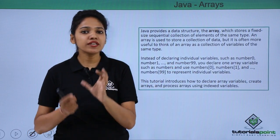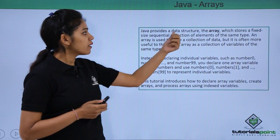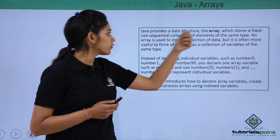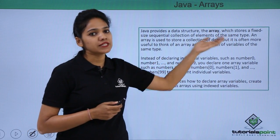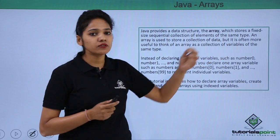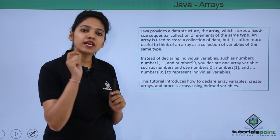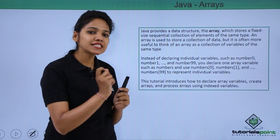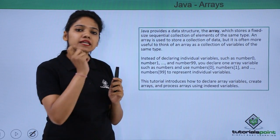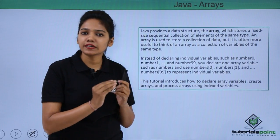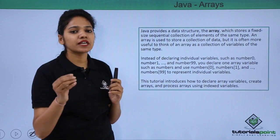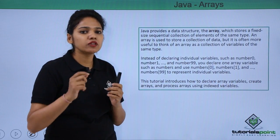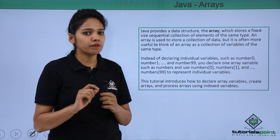An array has a fixed value. It provides a data structure called an array which stores a fixed sequence of elements, a fixed sequence of values. You declare that we have an array type, you need to provide the data type. An array holding a value of integer type can hold four values, five values, six values and so on that you would want to mention.